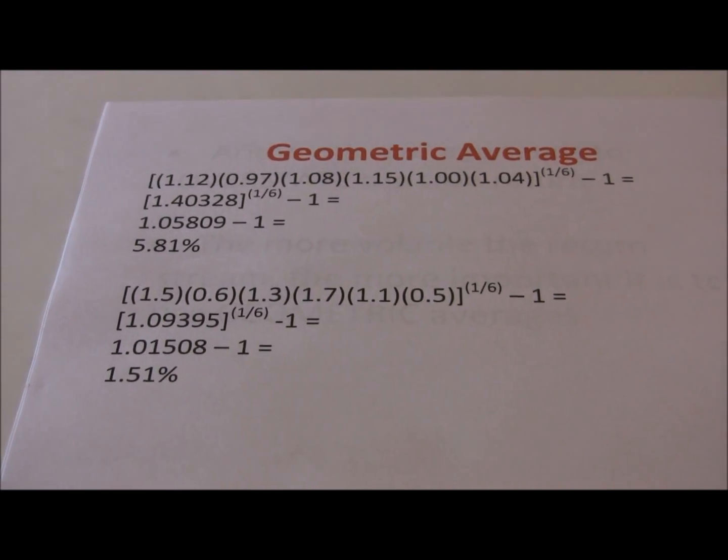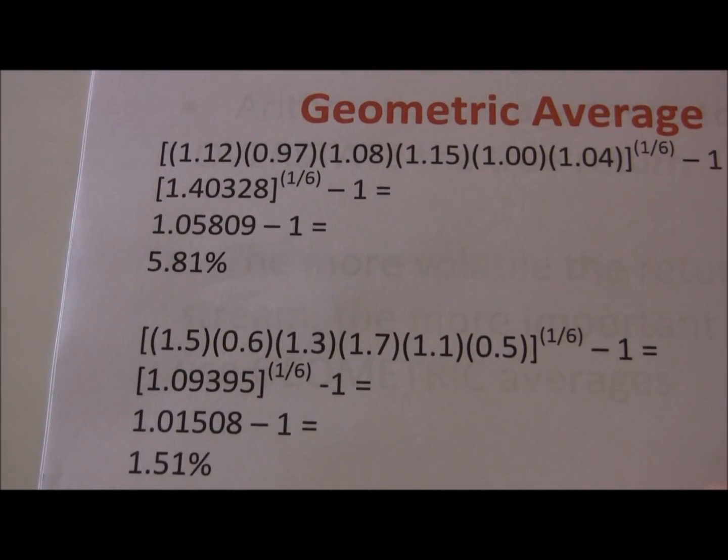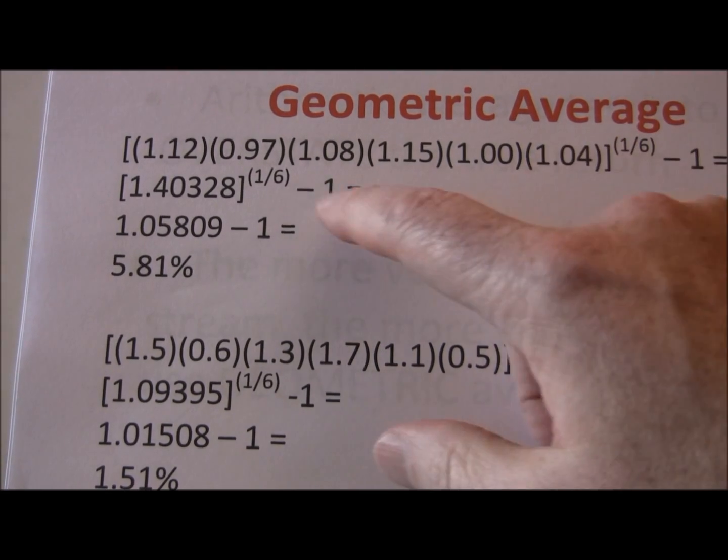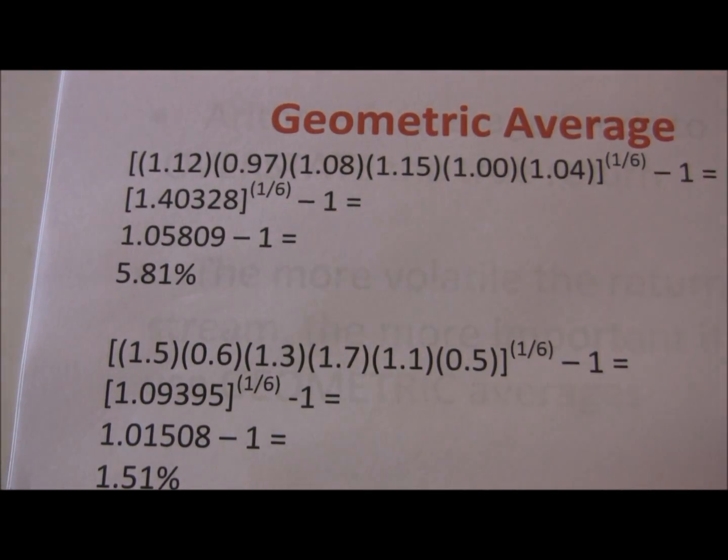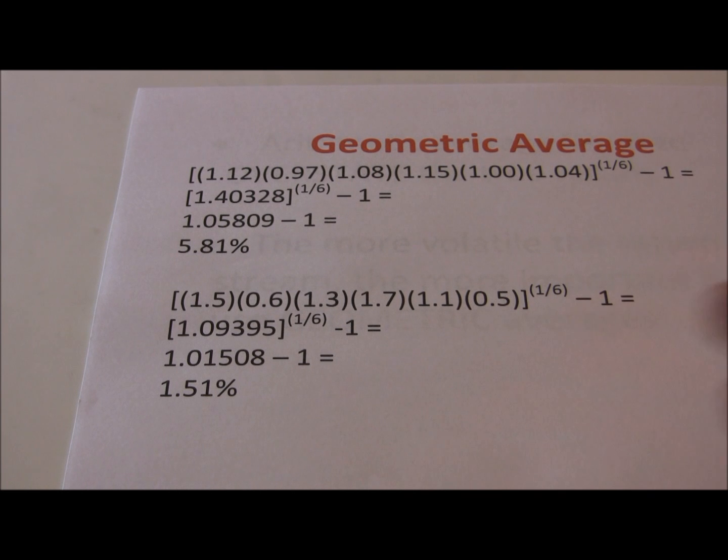We want to take that to the 1/6 power. The 6 comes from the number of periods. We had 6 years, so we need to take that to the 1/6 power.